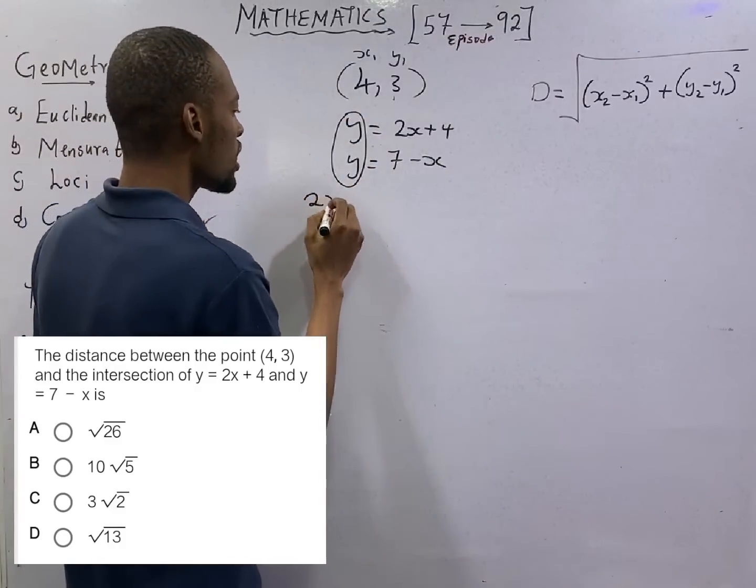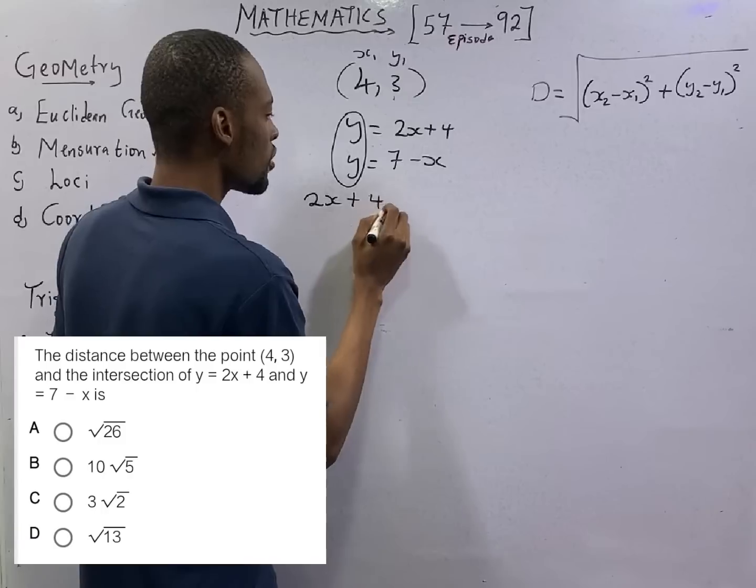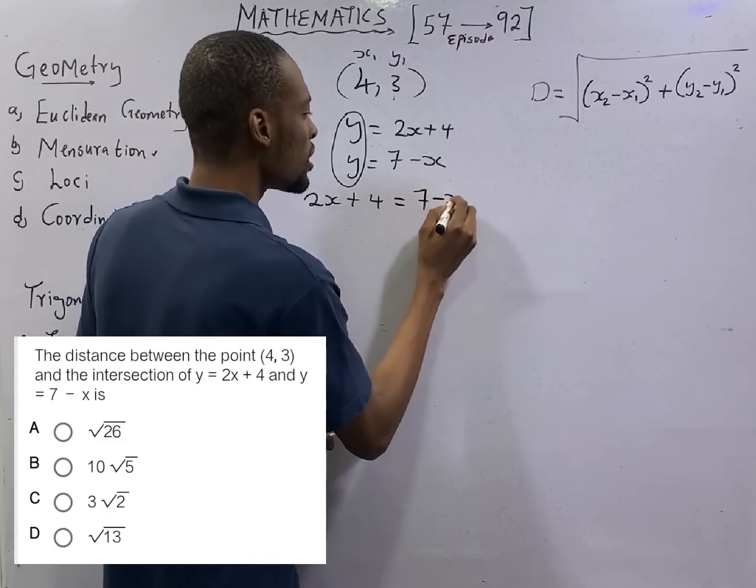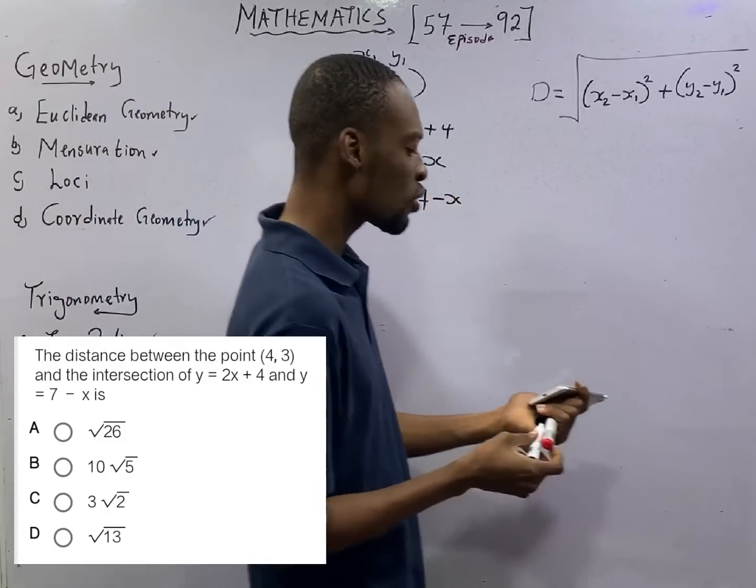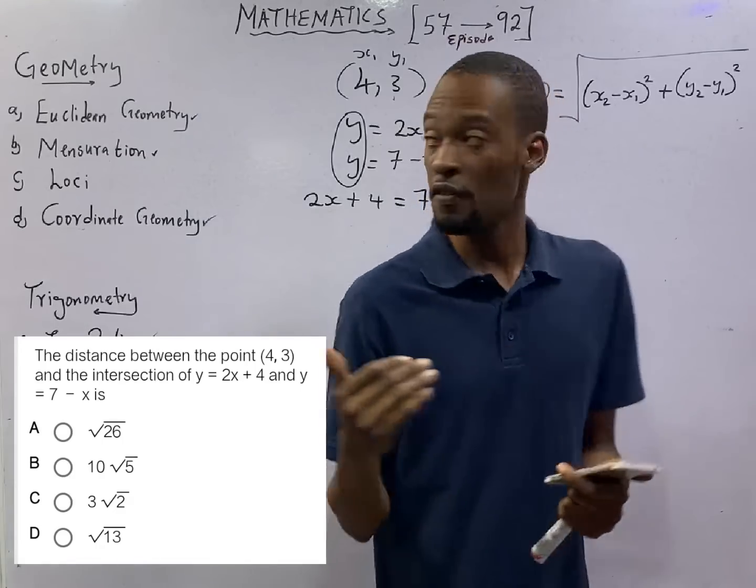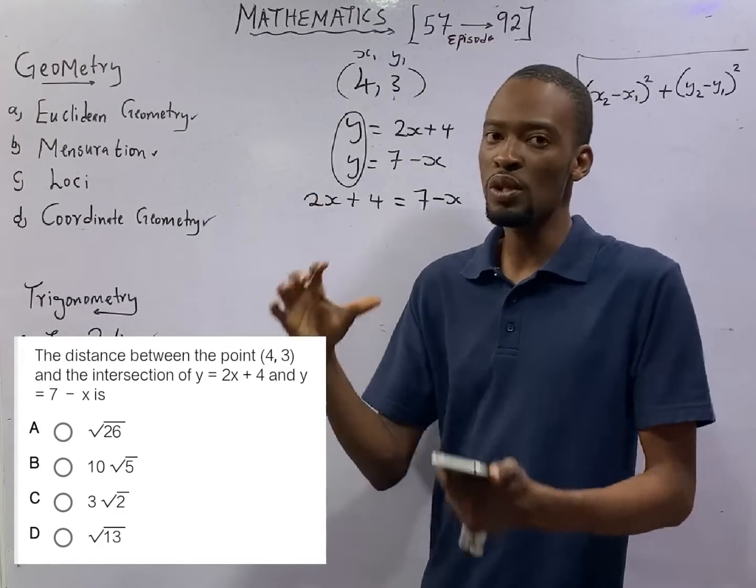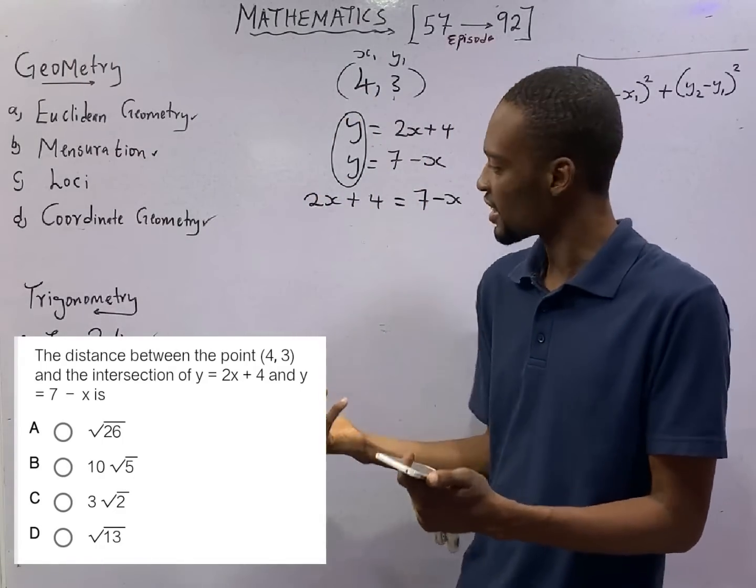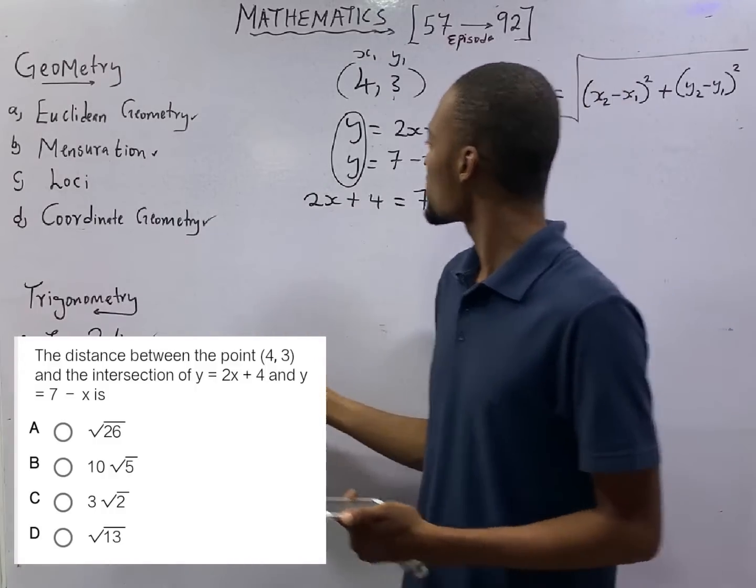Which means 2x plus 4 should equal 7 minus x. So anytime you see questions like this, you are given the first coordinate and you are given two equations and they say that the lines intersect, you equate them.